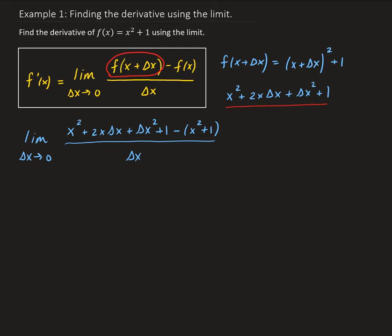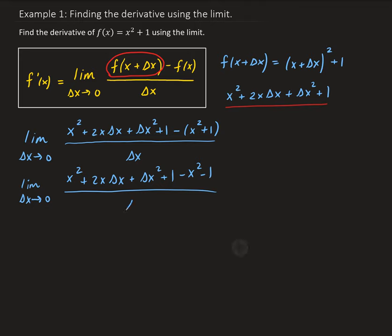From here, we just need to simplify and then take the limit. We get x squared plus 2x delta x plus delta x squared plus 1 minus x squared minus 1, all divided by delta x. Things cancel out: the x squared terms cancel, and the ones cancel, leaving us with 2x times delta x plus delta x squared, all divided by delta x.